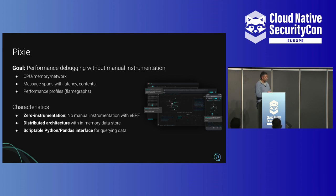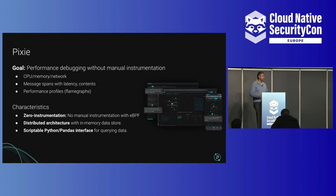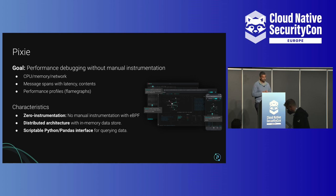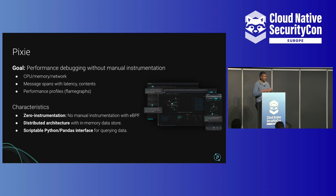The second characteristic is a distributed architecture, which means we can look at a lot of data. Since you can deploy this on every single node, you don't have to worry about bottlenecks when inspecting data. The third thing is the concept of a scriptable interface — you can actually write scripts to look for data loss.